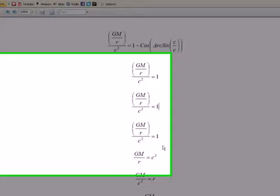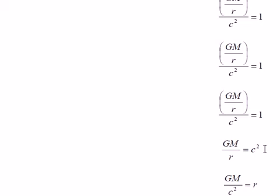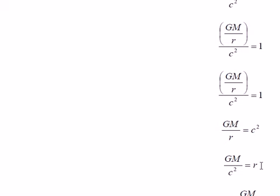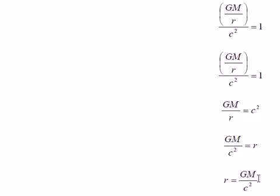GM divided by r is equal to c squared. And then we can switch them around. And we get GM over c squared is equal to r. And then we get r is equal to GM over c squared.